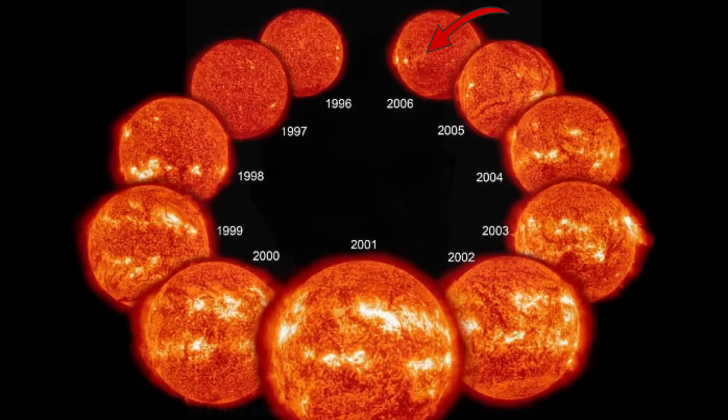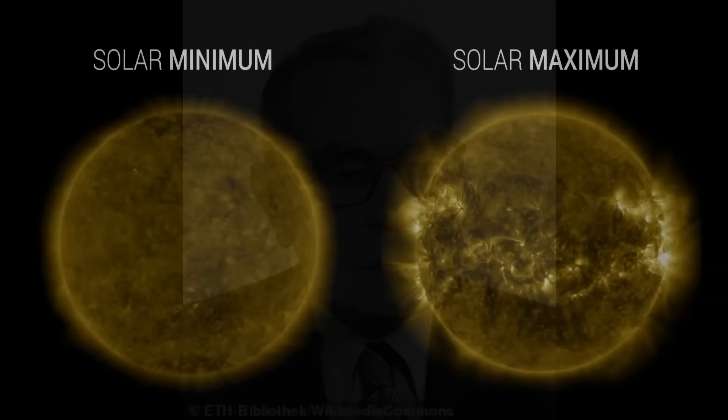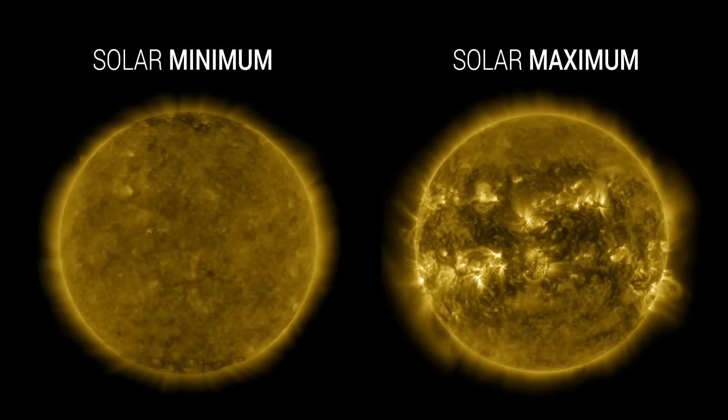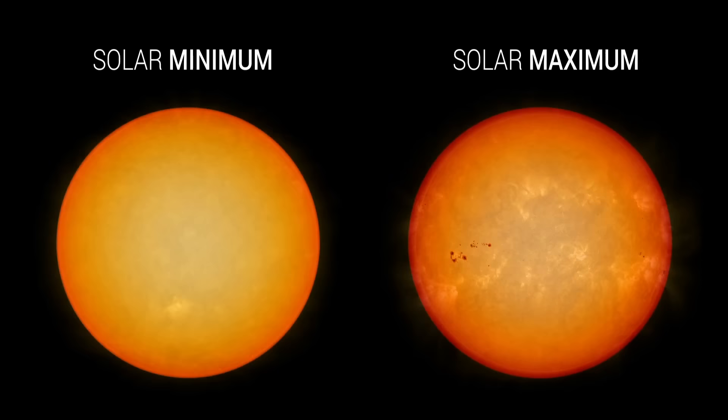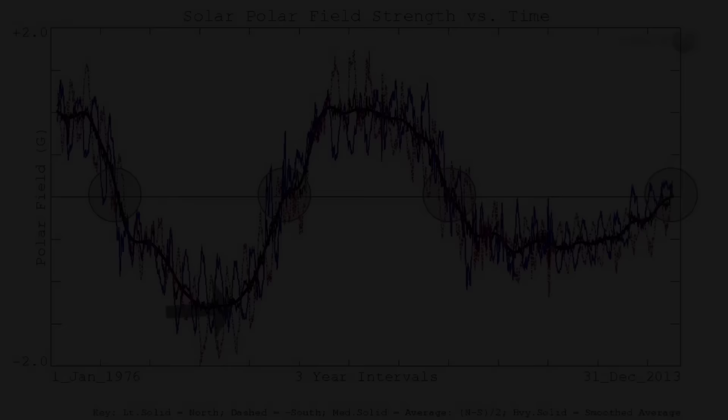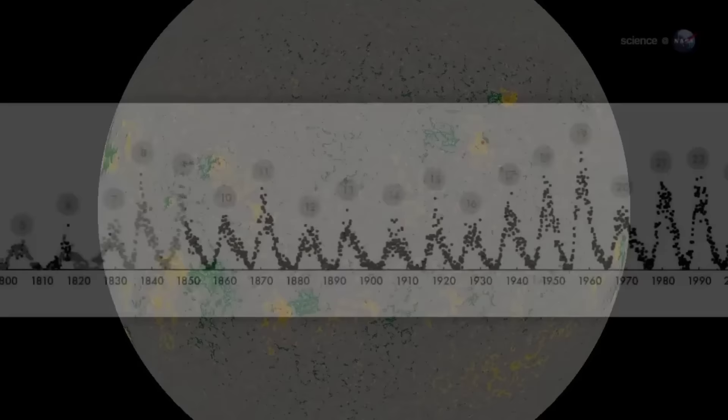Almost a century ago, Swiss astronomer Max Waldmeier left a trail of cosmic clues that scientists still follow today to predict when the sun will reach its solar maximum. Back in 1935, Waldmeier noticed something fascinating about sunspot cycles. He observed that the faster the rise of a sunspot cycle, the stronger its strength. He realized that a stronger cycle took less time to reach its maximum strength.